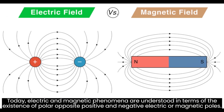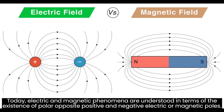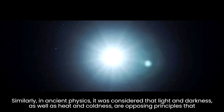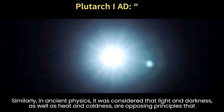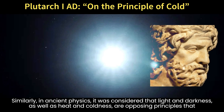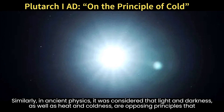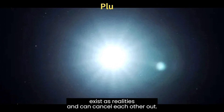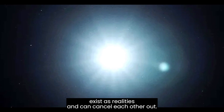Today, electric and magnetic phenomena are understood in terms of the existence of polar opposite positive and negative electric or magnetic poles. Similarly, in ancient physics, it was considered that light and darkness, as well as heat and coldness, are opposing principles that exist as realities and can cancel each other out.